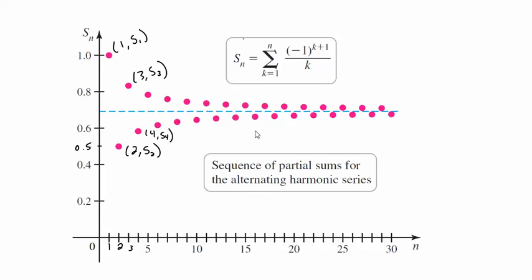So certainly it looks like this guy is converging to some value here. Whatever this value is here, that would be our infinite sum. Now there's a couple rules that have to be met, a couple criteria that have to be met in order for us to know whether an alternating series is converging. And we'll talk about those in the next video.